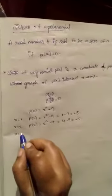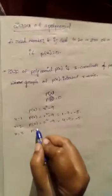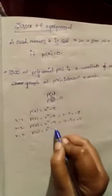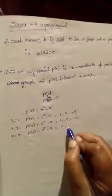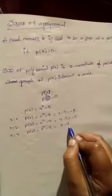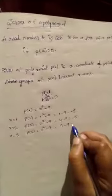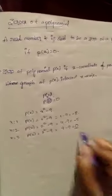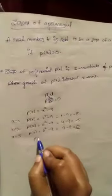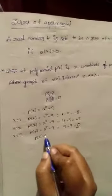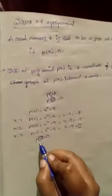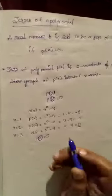If x equals three, p of three equals three squared minus nine. Three squared is nine, so nine minus nine equals zero. Here we get zero — p of three equals zero. So three is called the zero of the polynomial p of x.